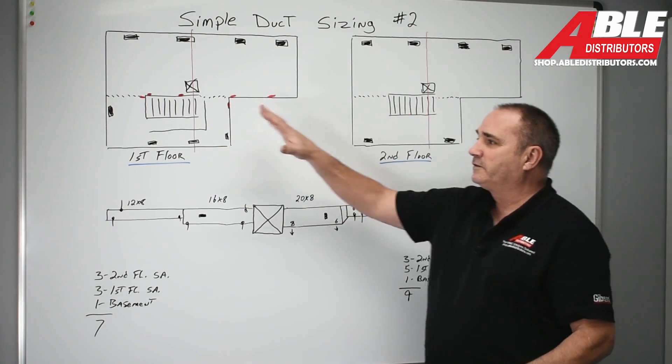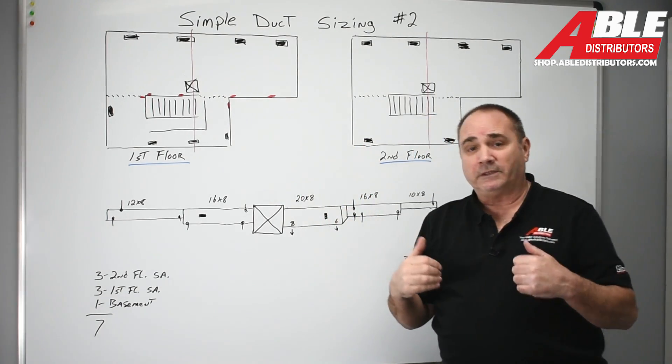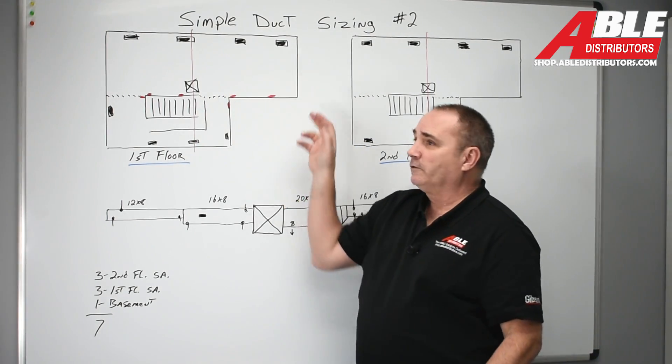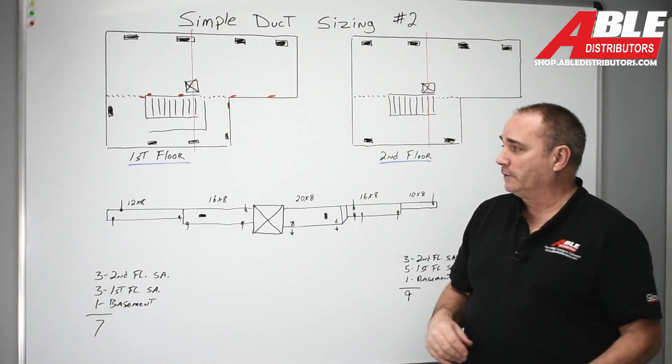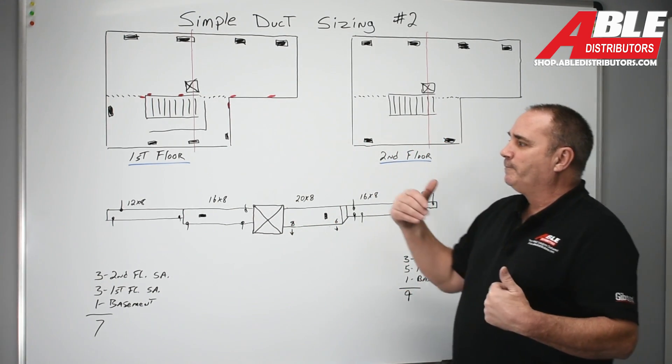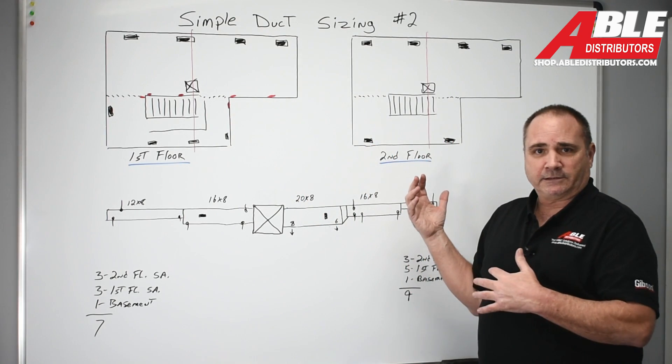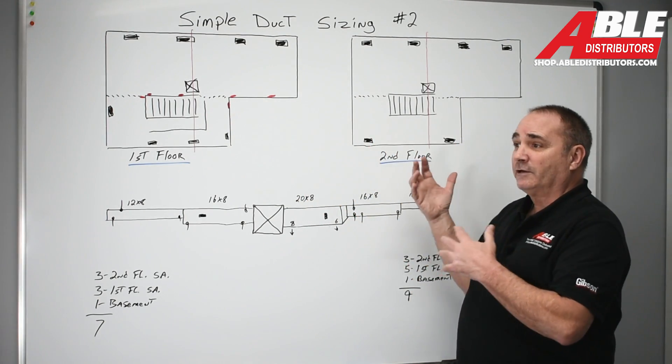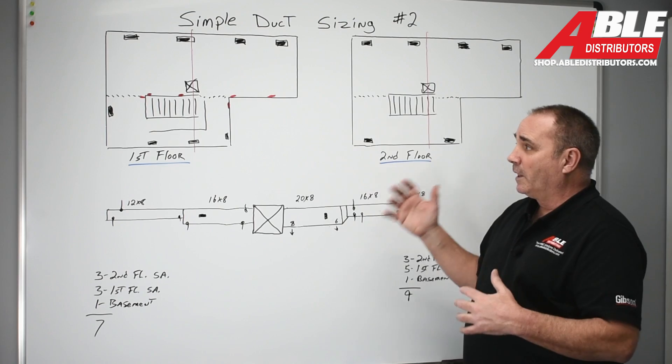You basically have to start out the same way even if you're doing manual D because you have to figure out your longest run supply and return. So what I did here was just to show you how I do it. I just did the supply side of things and I would do it the same exact way with returns as I'm doing with the supply.